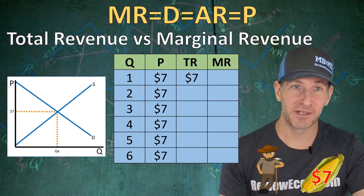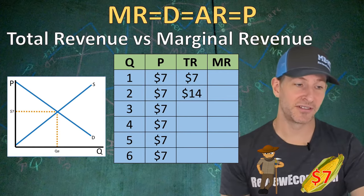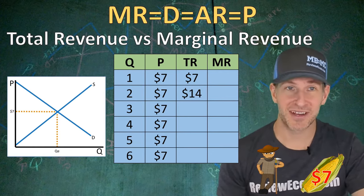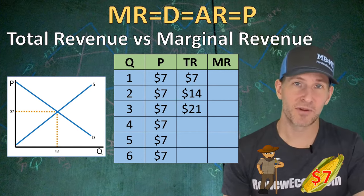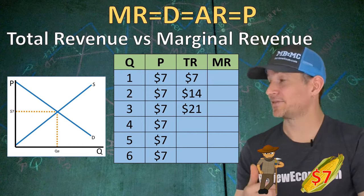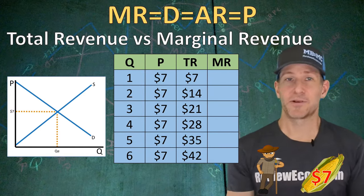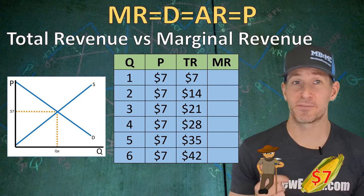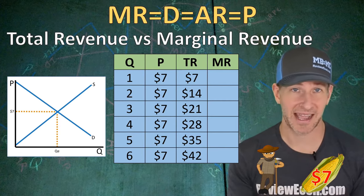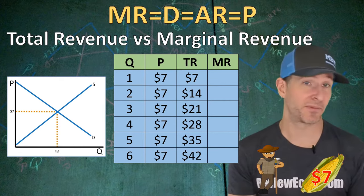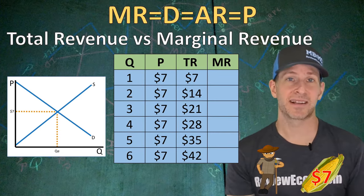At two units of output, 2 × $7 = $14 of total revenue. Three units of output, 3 × $7 = $21. We keep multiplying the quantity by the price to get the other total revenue values. You might think the business should just produce as much as possible since the price isn't going to change as they produce more output, but that's not where profit maximization is found.